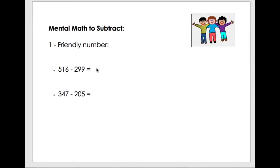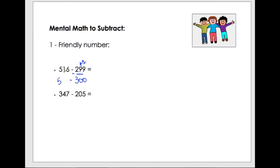So, guys, here another example of friendly number strategy. Let's do it just like this. I have this number here, and I need to do the subtraction here from this number here, right? I think that it's going to be way easier if I add 1 here to transform this number in 300. Then, I will subtract this from 516, right?